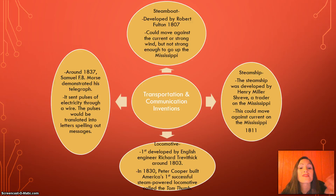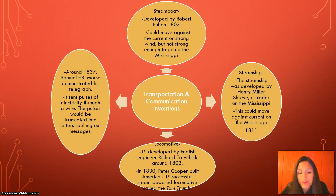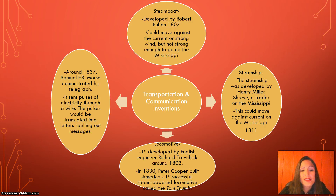The locomotive was first developed by English engineer Richard Trevithick around 1803. In 1830, Peter Cooper built America's first successful steam-powered locomotive, called the Tom Thumb. Then around 1837, Samuel F.B. Morse developed his telegraph, which sent pulses of electricity through a wire that were translated into letters spelling out messages — giving us Morse code.